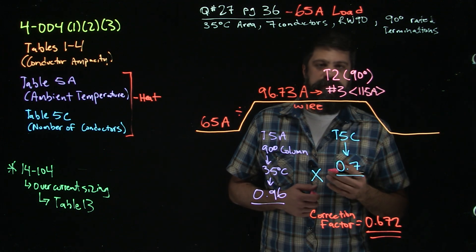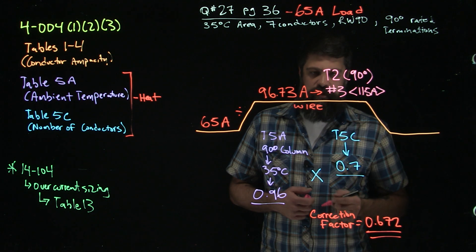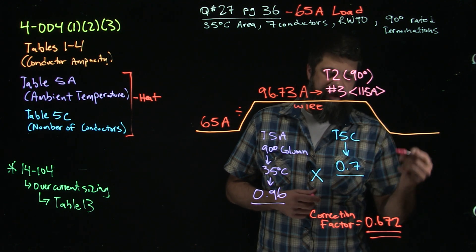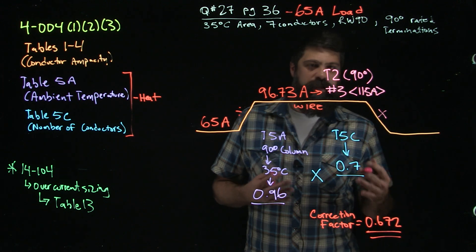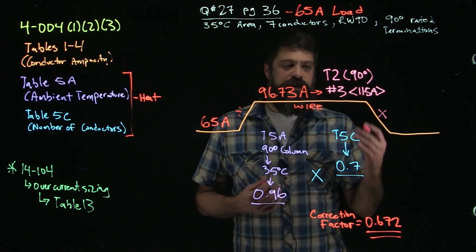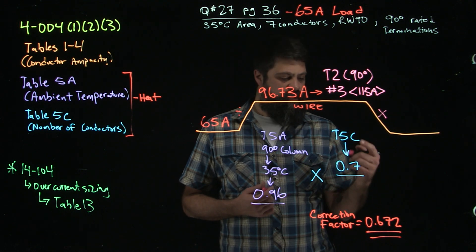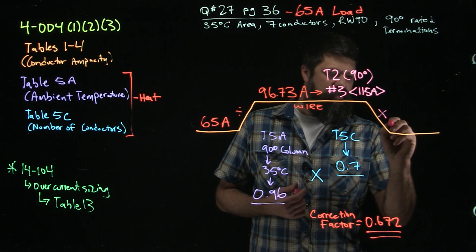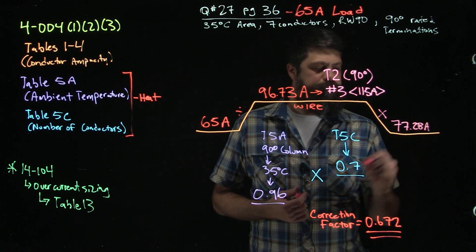That would be under 30 degrees Celsius with not more than 3 conductors, as Table 2 says. But we have our 0.672 correction factor, so now I'm going to bring that back down to figure out what the actual allowable ampacity of this number 3 wire is. So I would take 115 amps, which is what it's rated for, times my correction factor, which is going to give me 77.28 amps.